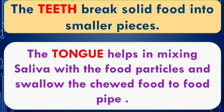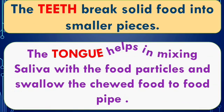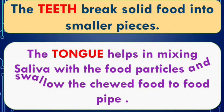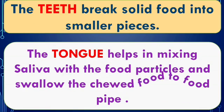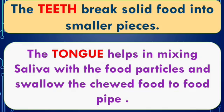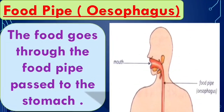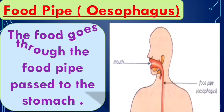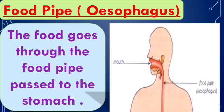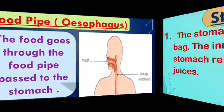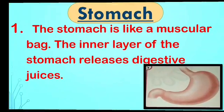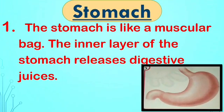The tongue helps in mixing saliva with the food particles and swallowing the chewed food into the food pipe. Next is the food pipe, also known as the oesophagus. The food goes through the food pipe and passes to the stomach.